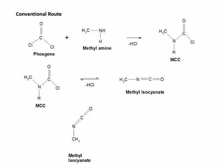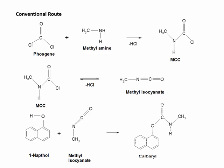This methyl isocyanate is treated with 1-naphthol. The electrons on the oxygen attack the positively charged carbon, the electron density moves to the nitrogen, and the negatively charged nitrogen abstracts the hydrogen atom. The lone pair of oxygen is retained, and this is how we get the final product known as carbaryl or Sevin.